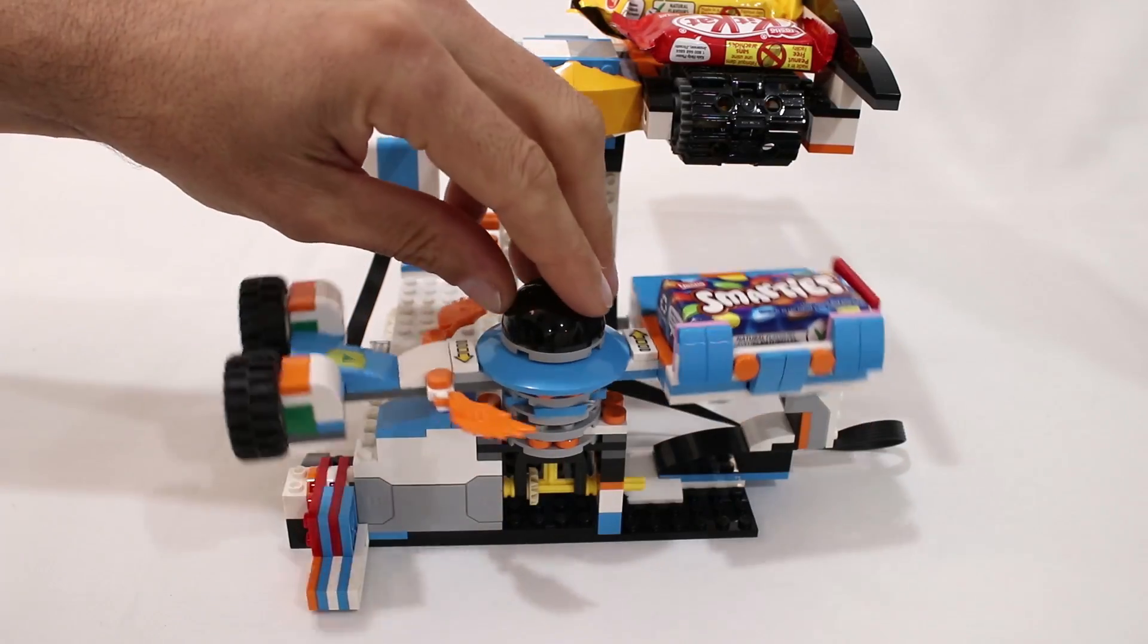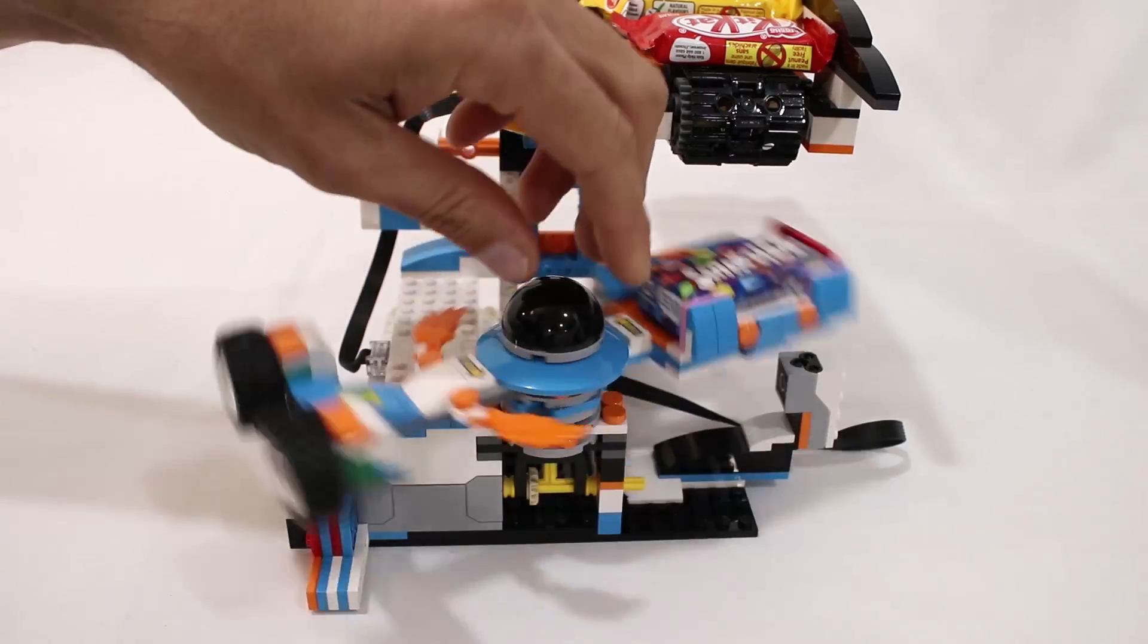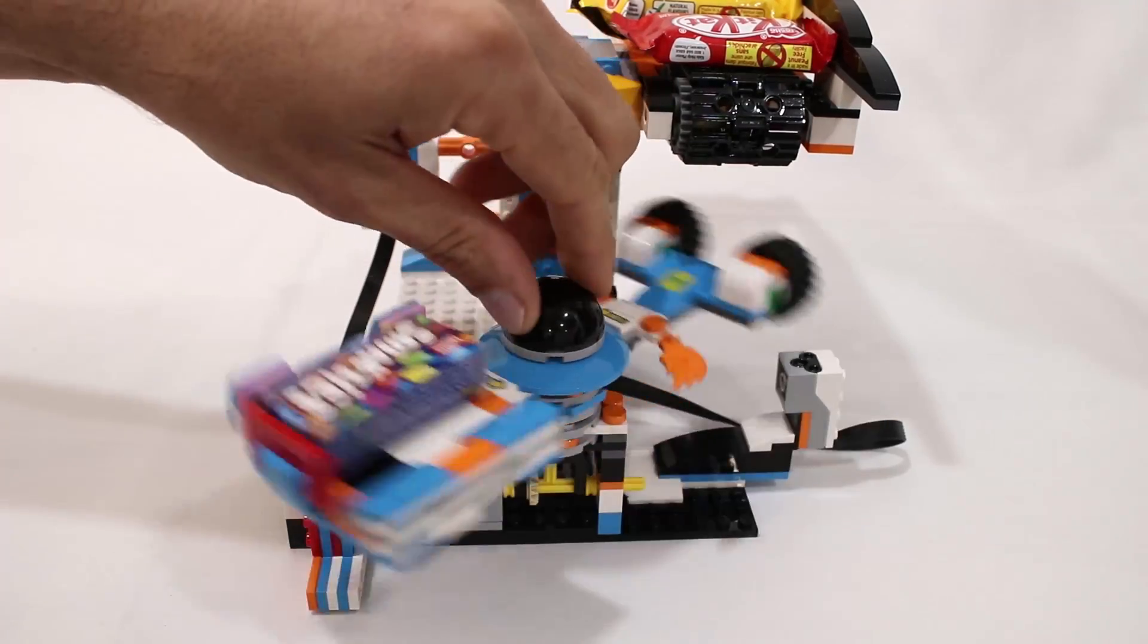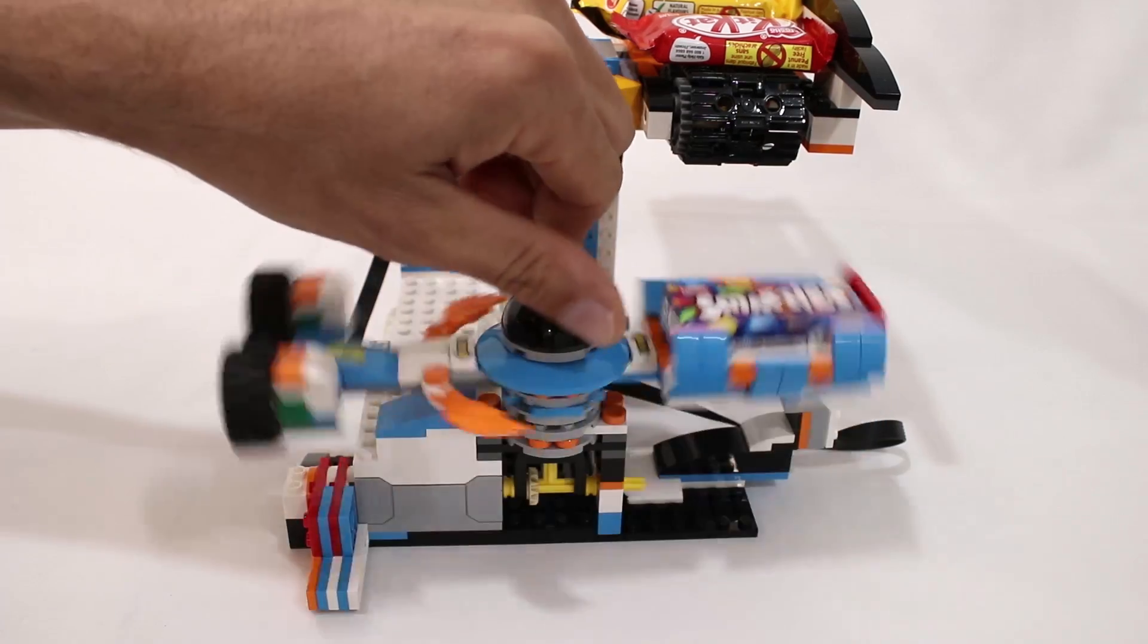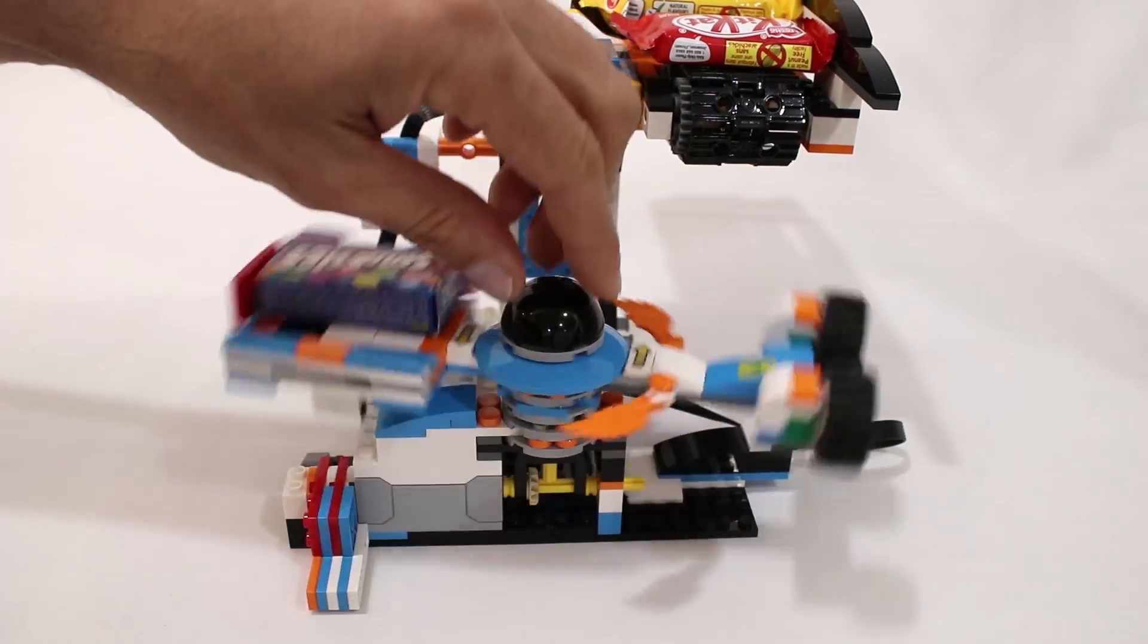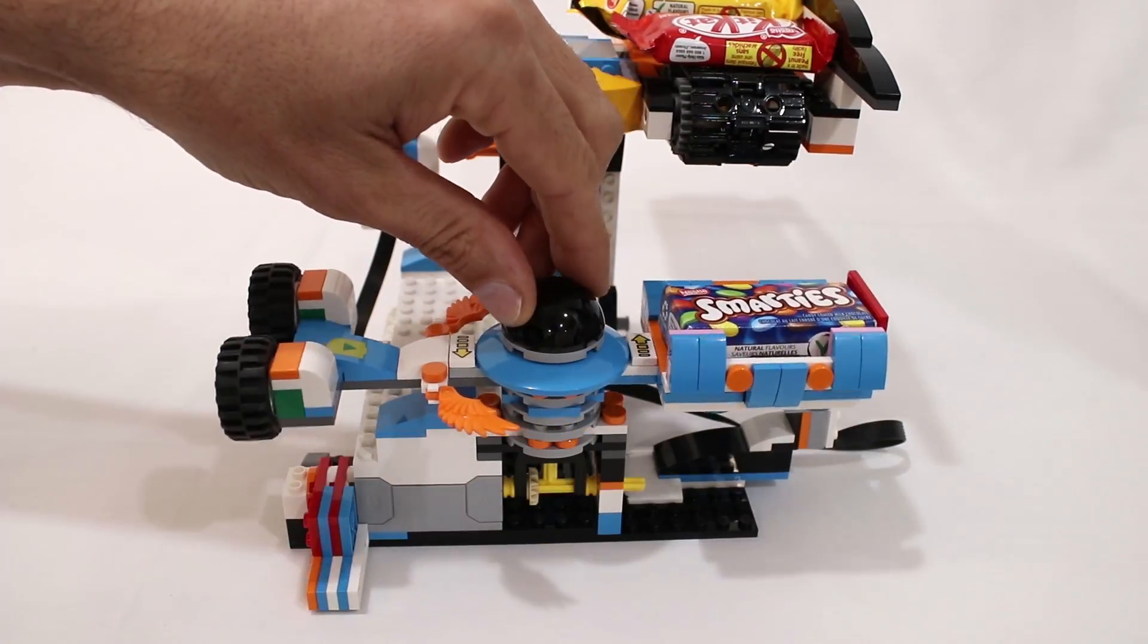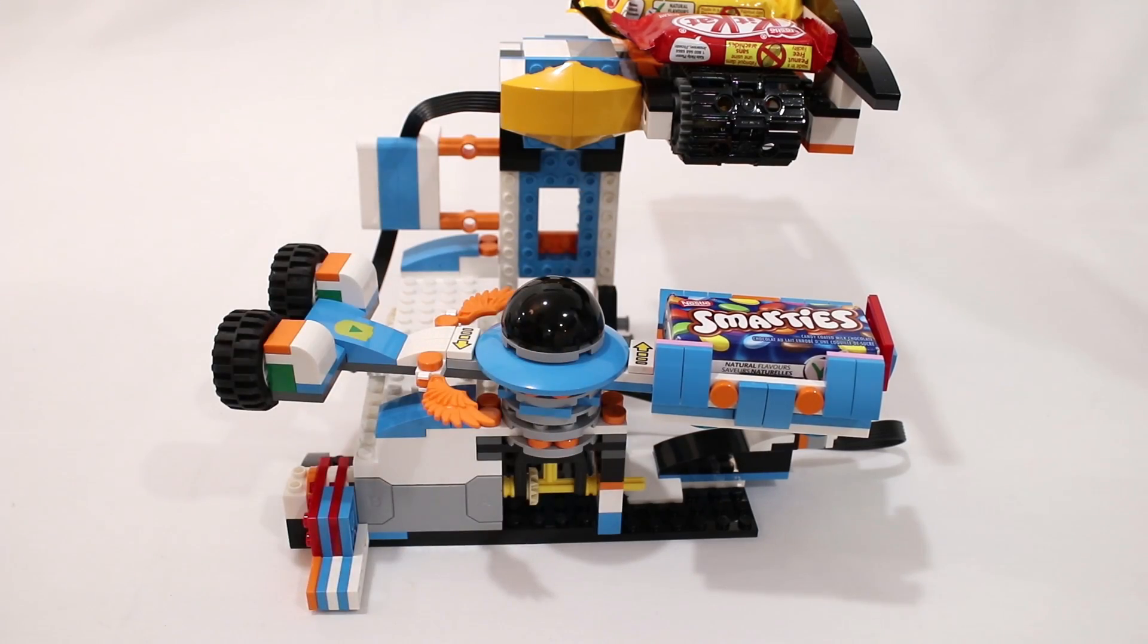But we can use the LEGO motor to get this armature to spin quite fast. And it doesn't really matter how long it takes to get the armature spinning up to speed—it could take a quarter of a second or half a second. But once it is spinning at speed, we have access to all of this rotational kinetic energy to launch the chocolate.